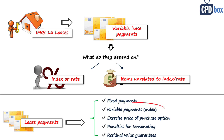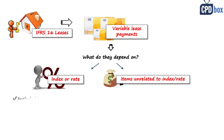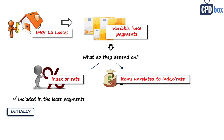Variable payments that depend on an index or rate are part of the lease payments, so the lessee must take the inflation adjustment into account when applying IFRS 16. Initially, you never know how much the inflation adjustment will be after some time — but you don't need to estimate it. Initially, you simply ignore it and calculate your lease liability and right-of-use asset based on unadjusted lease payments as known at the commencement date.